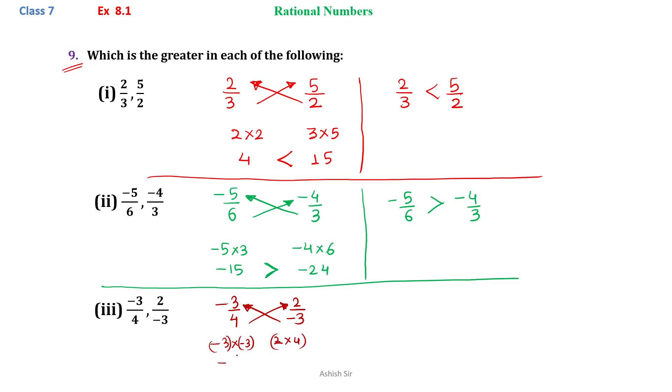Minus 3 into minus 3 on the left and 2 into 4 on the right. On the left, minus 3 into minus 3 is 9. On the right, 2 into 4 is 8. It's clear that 9 is greater than 8, so the original number on the left is greater: minus 3 by 4 is greater than 2 by minus 3.